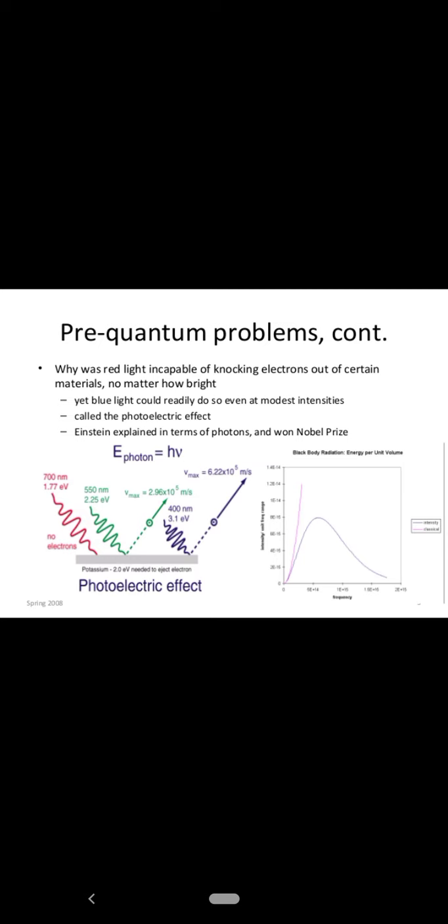So why did this study of quantum mechanics arise? What led to the study of quantum mechanics? This problem arose: why was red light incapable of knocking electrons out of certain materials no matter how bright? As we know, in the photoelectric effect when light is incident on the surface of a material, electrons are emitted from the material. However, when red light was incident on a photoelectric material, there was no ejection of electrons from that material.